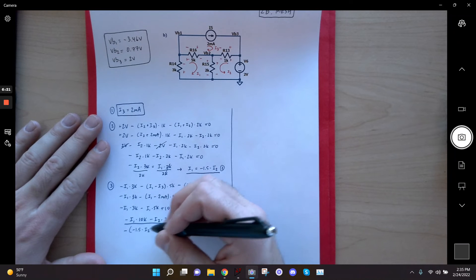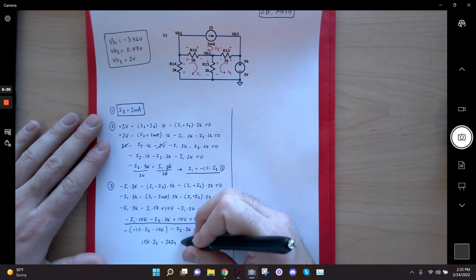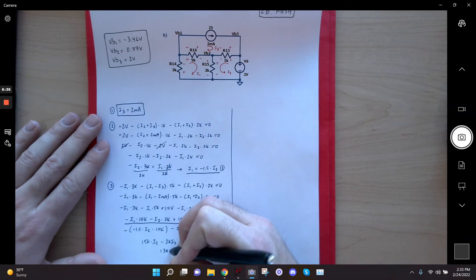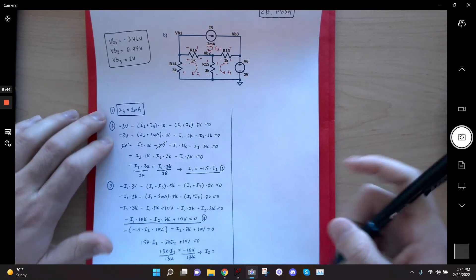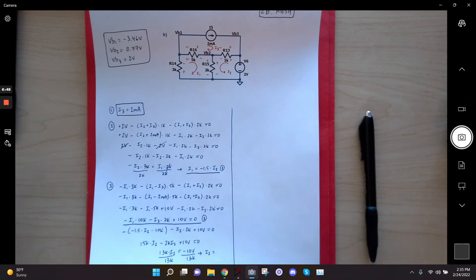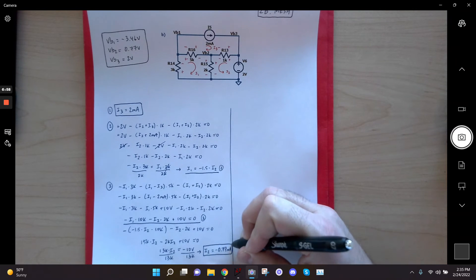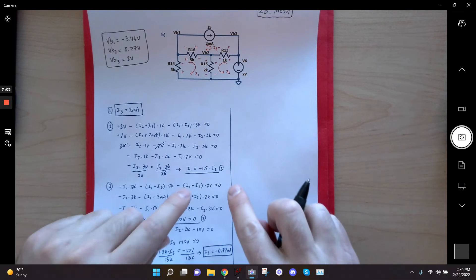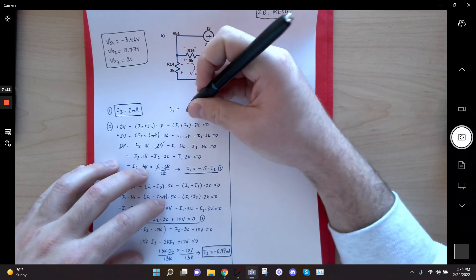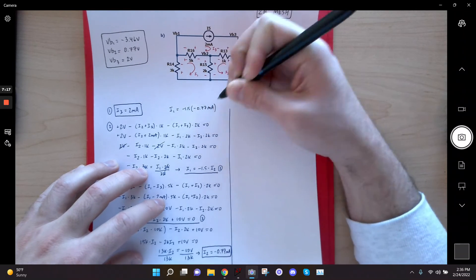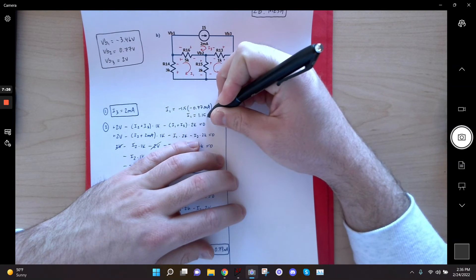Now if I work this out, that's a plus 1.5 times 10K is going to give me 15K times I2. And then I have a minus I2 times 2K plus 10 volts equals 0. That becomes 13K I2 equals negative 10 volts. I divide by 13K. And I get I2 equals whatever 10 over 13K is. So it's going to be negative 0.77 milliamps. All right. So now I've got I2.